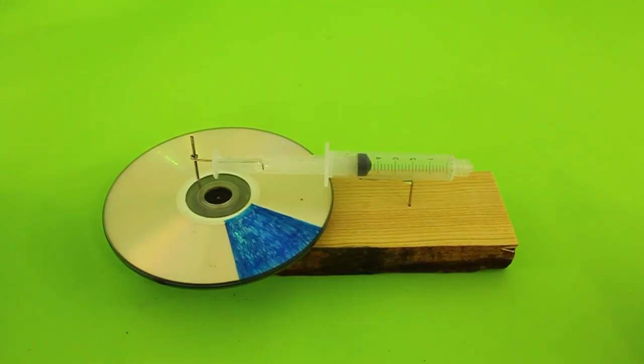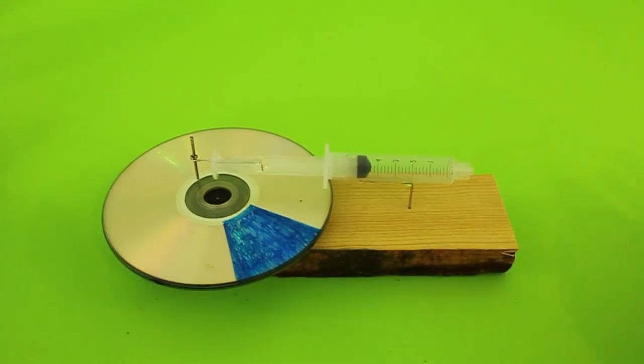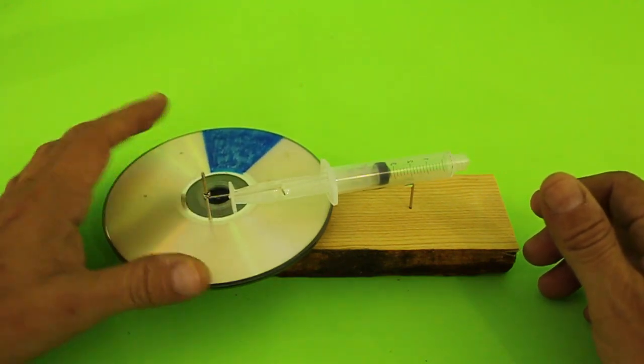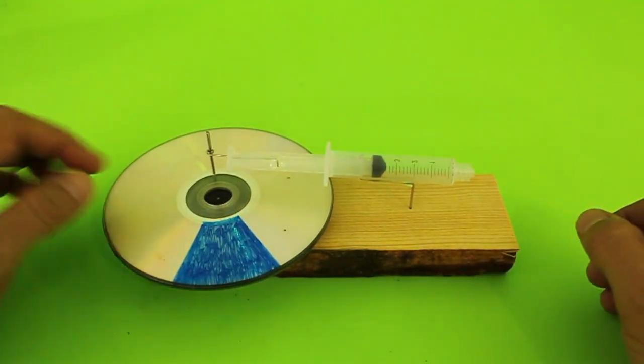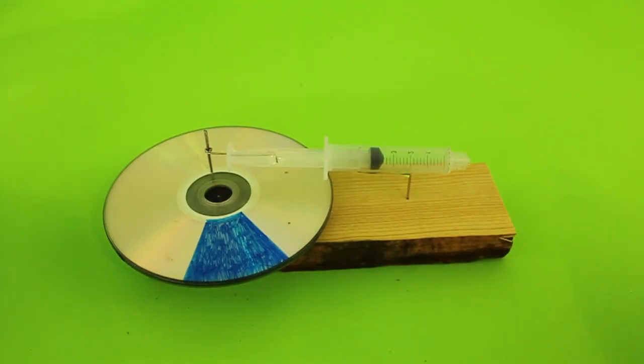Okay, there you have it. A very simple to make pneumatic engine. Nothing special is needed: a common syringe, CDs with the motor, piece of wood and some wire. Hope you liked the video. Thanks for your visit. If you want to help me, please visit my Patreon page. Thanks and see you in the next video.